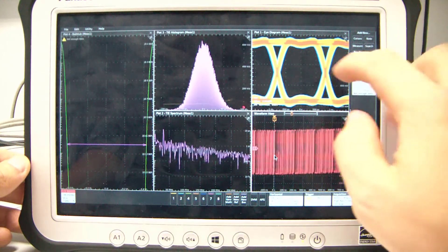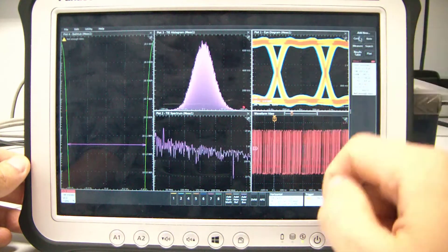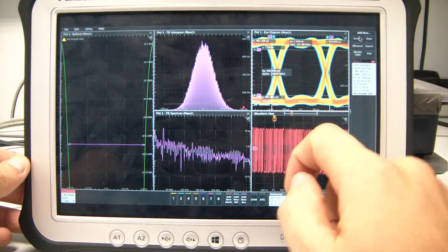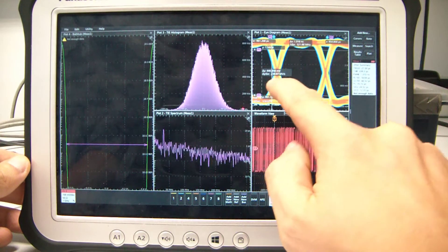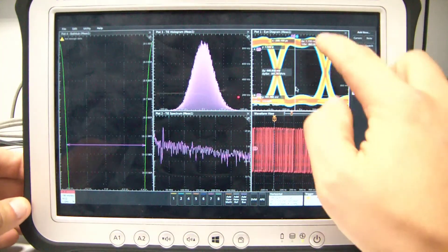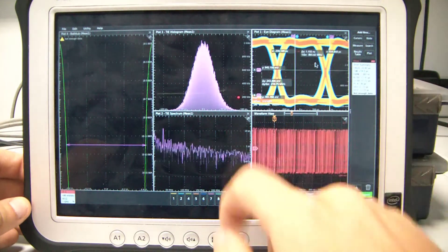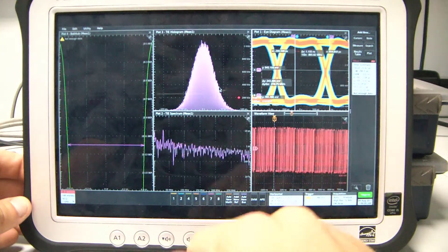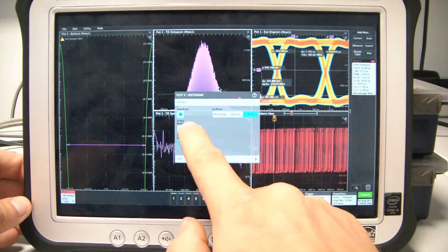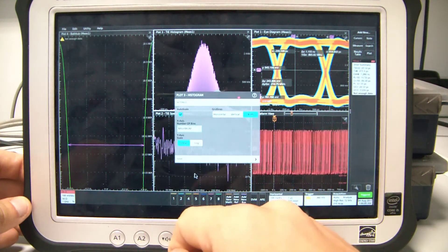So now I can bring up cursors here on the eye diagram and move them very easily. I can change the settings of my histogram. I can add more bins, for example.